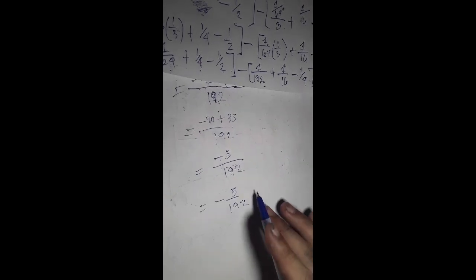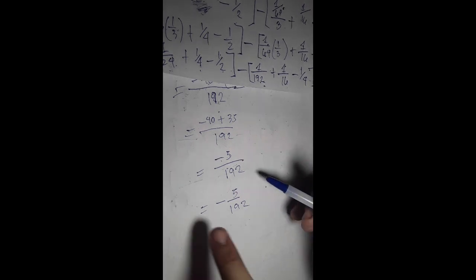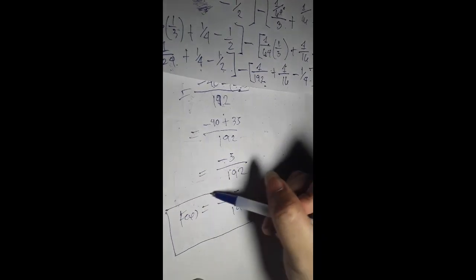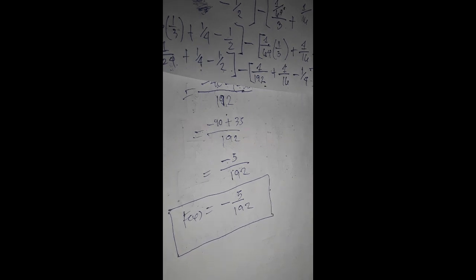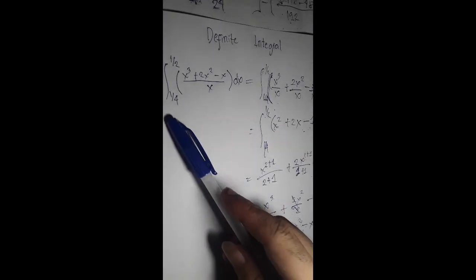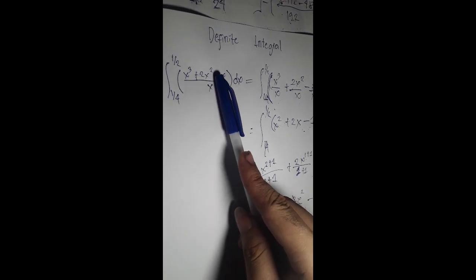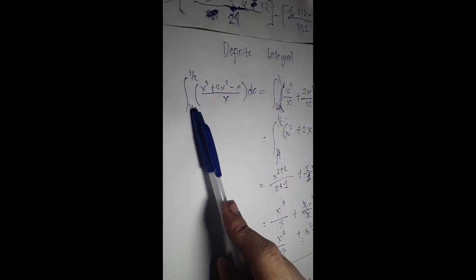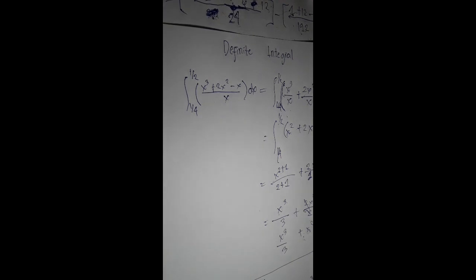We don't need to put plus C because we are in the definite integral. So the final answer of our problem — the integral of x cubed plus 2x squared minus x over x dx, evaluated from 1 half to 1 fourth — is negative 5 over 192. Thanks for watching and don't forget to subscribe to the PLANS 57 CFD channel.